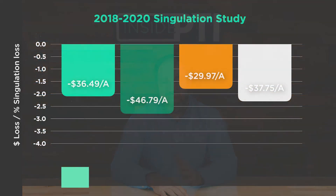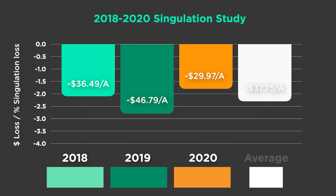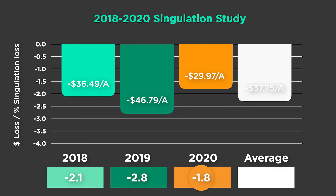This study has been replicated now three years at the PTI farm, and the data has shown some very interesting results. In 2018, comparing 95% to 99%, each percent difference of that four percent cost about 2.1 bushels per acre in yield. In 2019, each percent of singulation cost 2.8 bushels in yield. In 2020, each percent of singulation performance decrease cost about 1.8 bushels in yield. Over the course of these three years, the average is 2.2 bushels per acre lost per percentage of singulation reduction going from 99% or above to 95%.